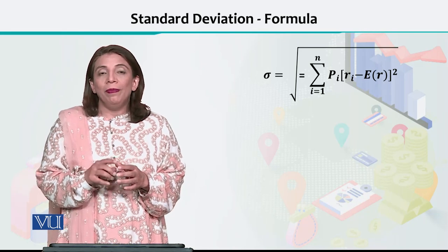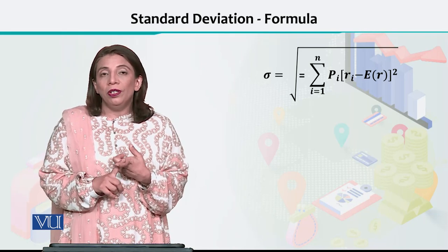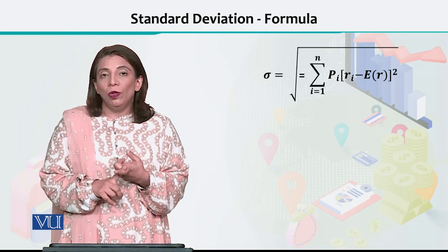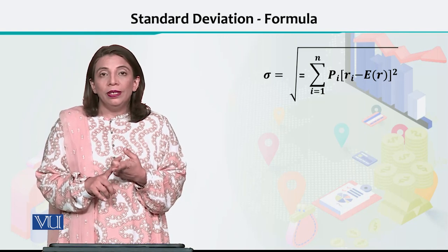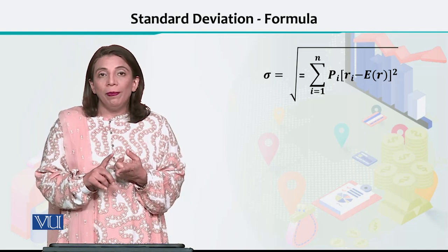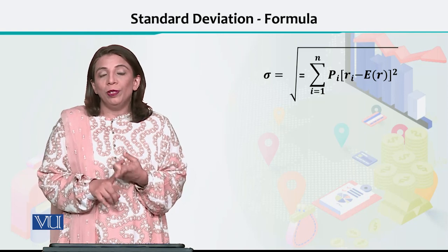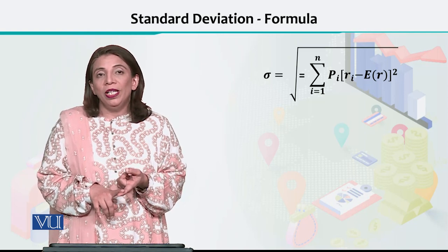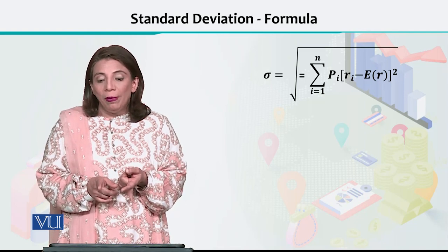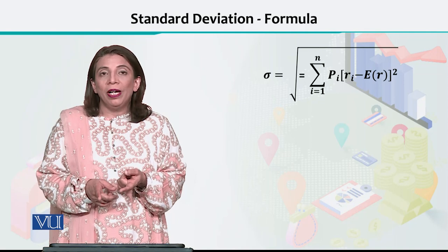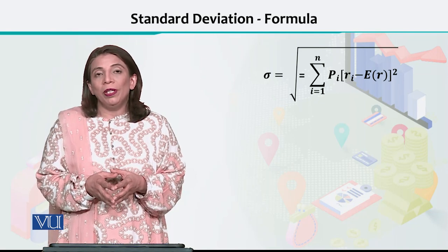How do you plug it in? You will multiply every return value, subtract the mean from it, and then multiply by its corresponding probability. After summing all those values you will get the variance.